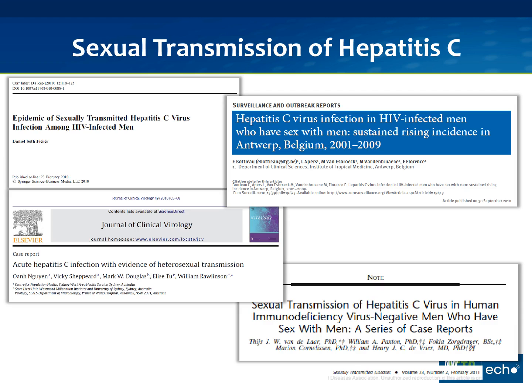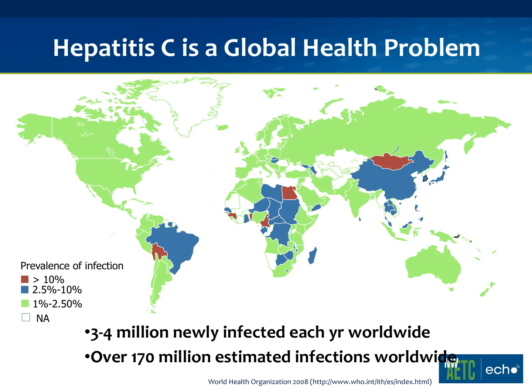There have been several reports documenting sexual transmission of hepatitis C, and one thing I wanted to point out is that these reports have been in HIV-positive men — first reported in Europe and the Netherlands, then in Great Britain, and also here in the United States. The common denominators in all these reports are that methamphetamine was often involved, and the highest risk was in receptive anal intercourse — so there's some kind of traumatic mucosal exposure.